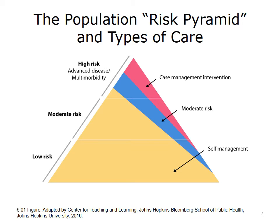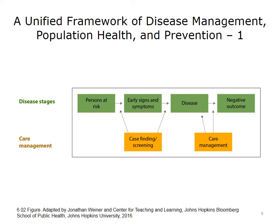This is actually a simplified graphic, but the focus here is: how does one take this theoretical presentation and actually translate it with data to identify specific individuals? This graphic is a unified framework for health care, prevention, and disease management. This framework has three dimensions: the stages of disease, the levels of population health intervention, and the continuum of prevention.